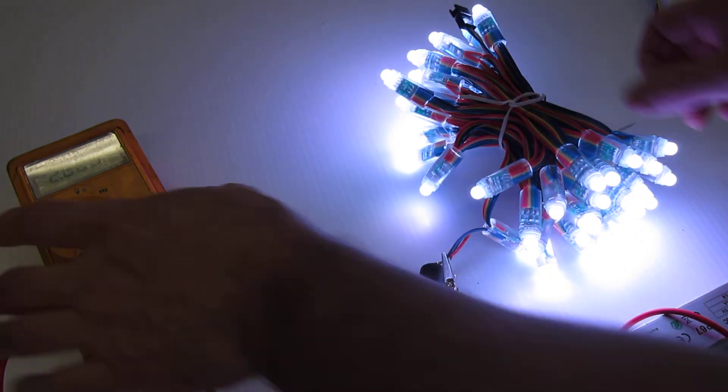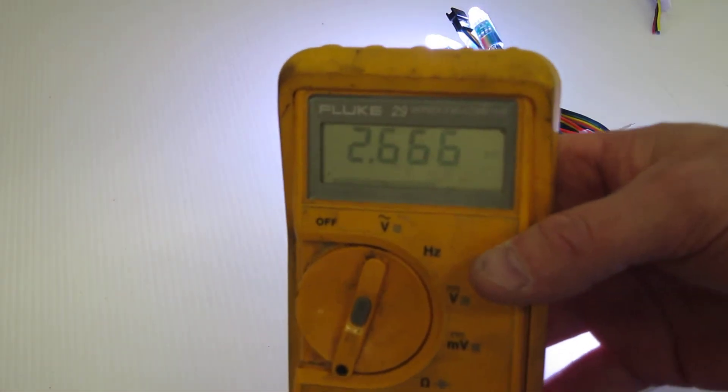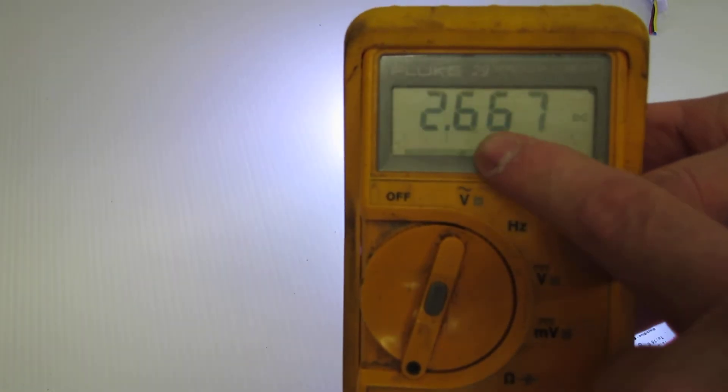You can see that they come out white. What we have showing here on the screen is 2.66 amps.